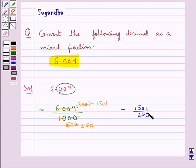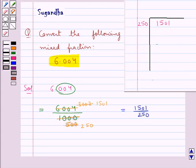Now to convert this into mixed fraction we will divide 1501 by 250. Now 250 times 6 is 1500 and we get 1 in the remainder. And so this fraction can be written as 6 1 upon 250.